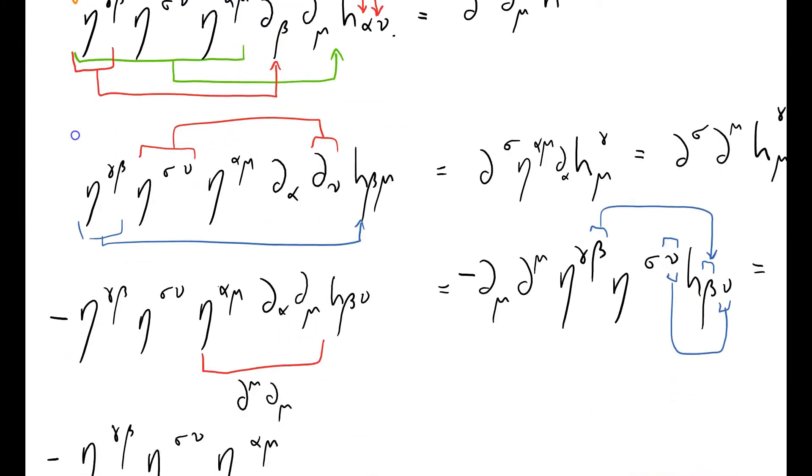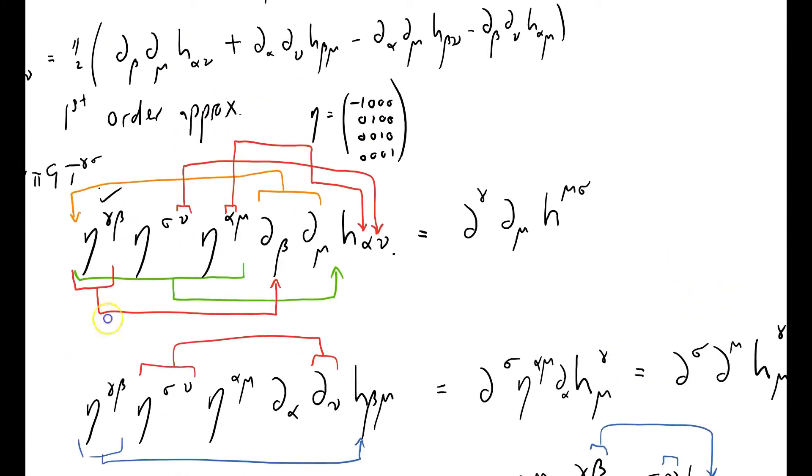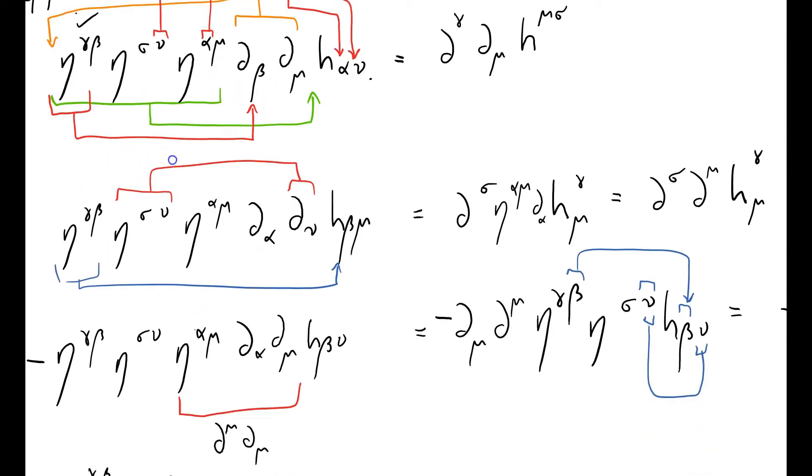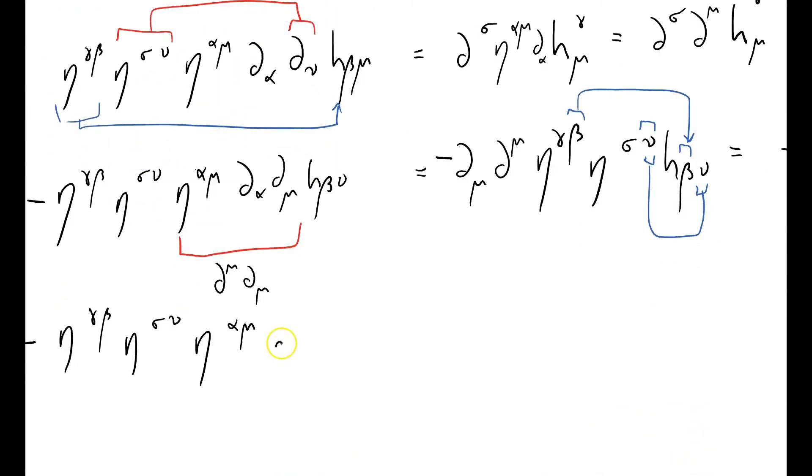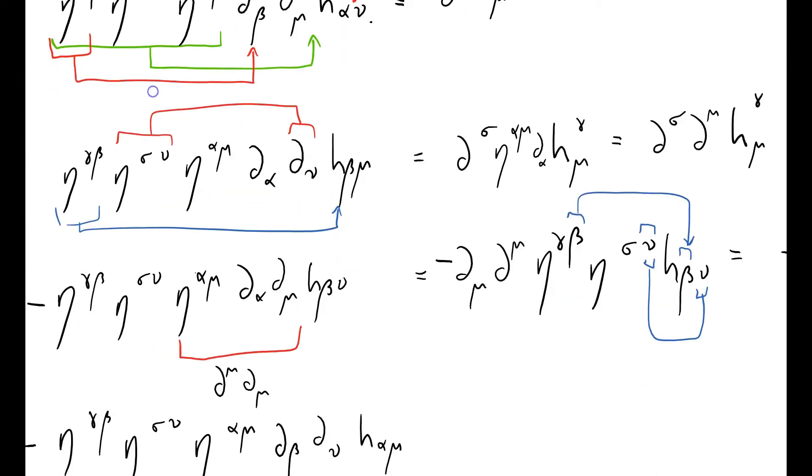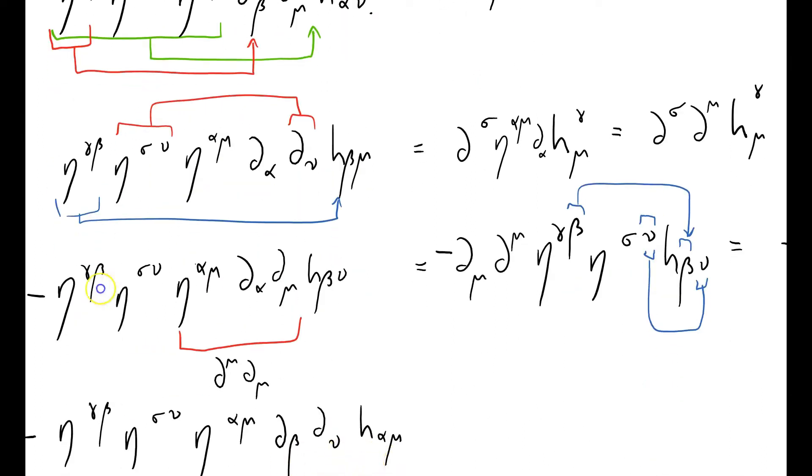What am I doing here? One, two, three, that's the fourth term. One, two, three, that's the fourth term. So it's a minus. Have I got the minus? Yes. Beta nu alpha mu. Is that right? Beta nu alpha mu. Yeah, that's right.